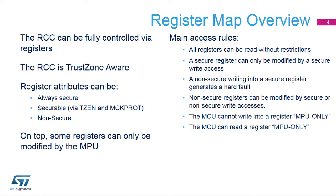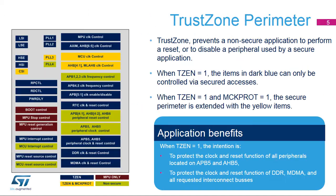On top of TrustZone, some registers of the RCC can only be written by the MPU — those offering services dedicated to the MPU. Those registers are also sensitive to TrustZone, so it is possible to have registers allowing only secure write-accesses performed by the MPU. All registers can be read without restrictions. The MCU is also allowed to read registers dedicated to the MPU. A secure register can only be modified by a secure writing; a non-secure writing into a secure register generates a hard fault. The MCU cannot write into a register designated MPU only. At the RCC level, the TrustZone feature prevents a non-secure application from performing a reset or disabling a peripheral used by a secure application.